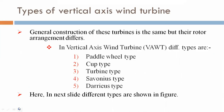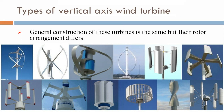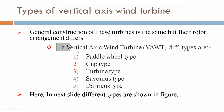Now we are discussing types of vertical axis wind turbines. The general construction of this turbine is the same, but their rotor arrangement differs. Different types of vertical axis wind turbines are: pedal wheel type, cup type, turbine type, Savonius type, and Darrieus type.